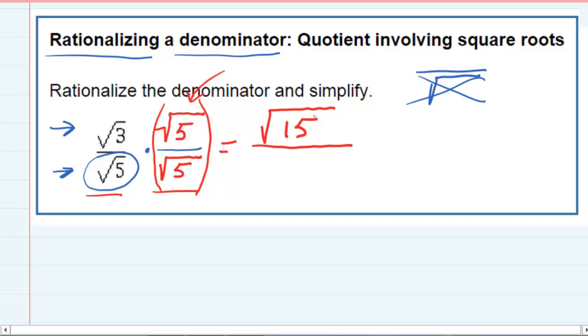But the reason that I chose the square root of 5 is for what's going to happen in the bottom. When I multiply these square root of 5 and square root of 5, I get the square root of 5 times 5, which is 25.